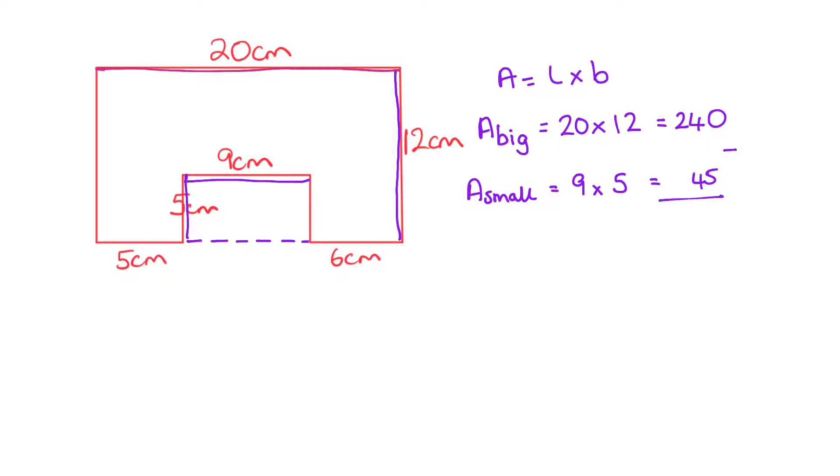So the area that we're looking for is going to be the big area, which is 240, take away the small area, which is 45, and that gives us 195 square centimetres.